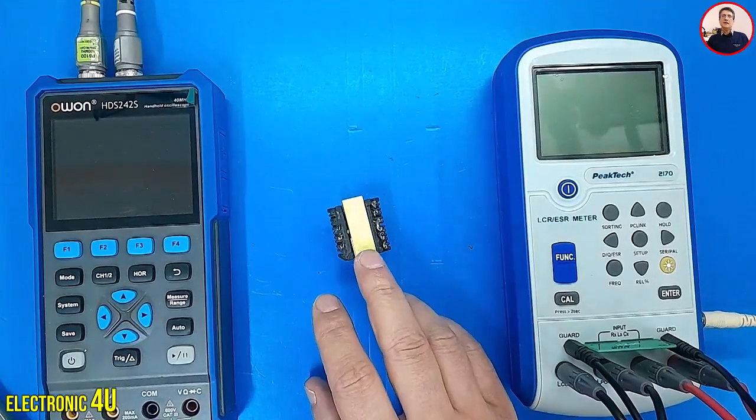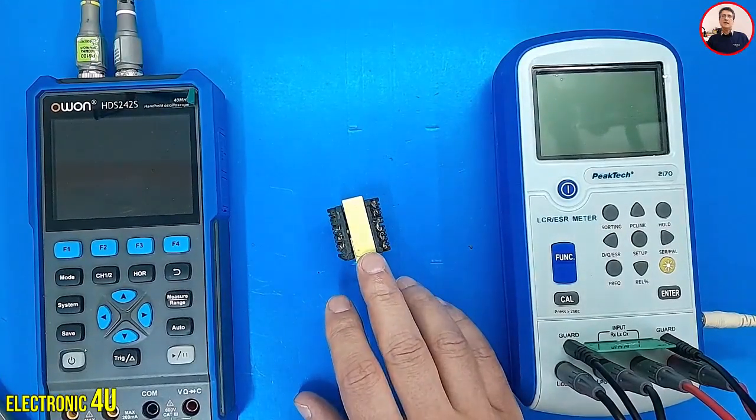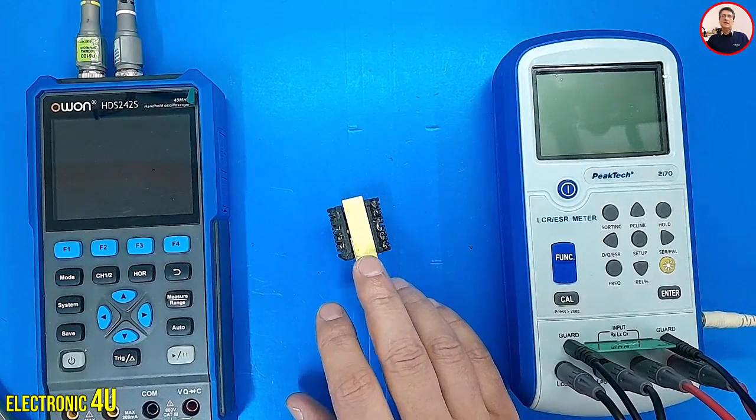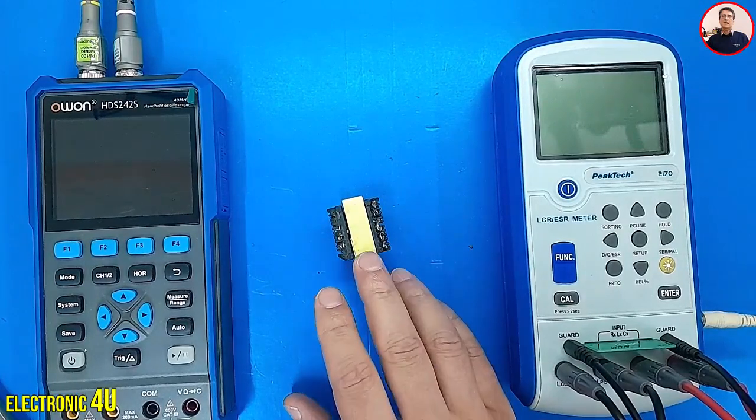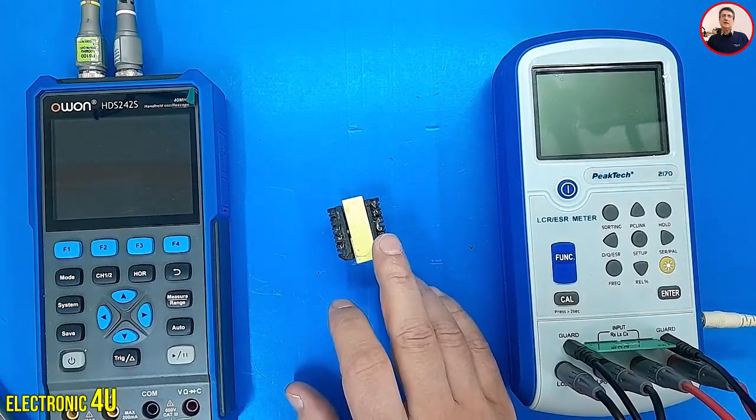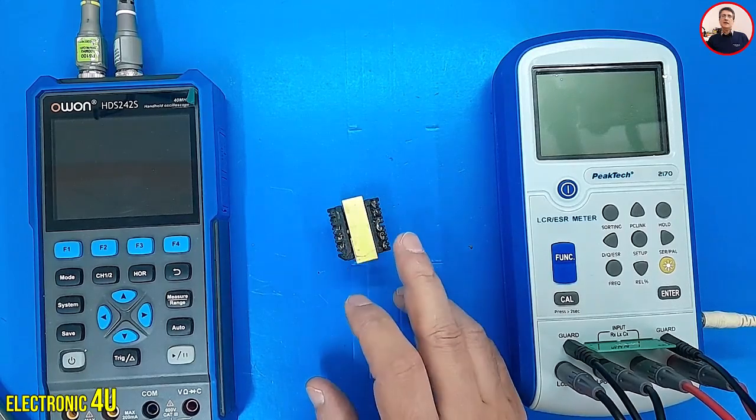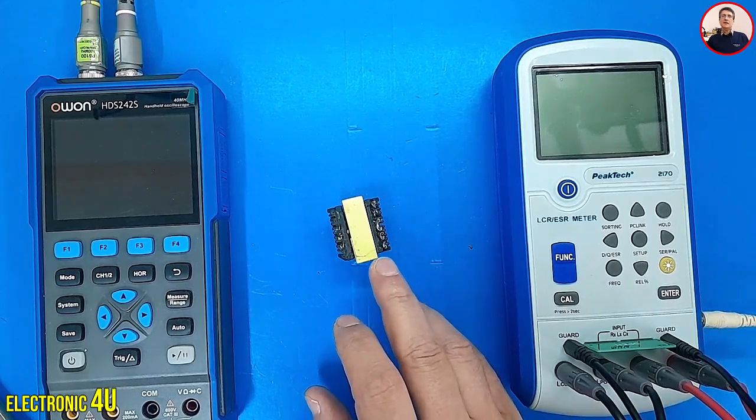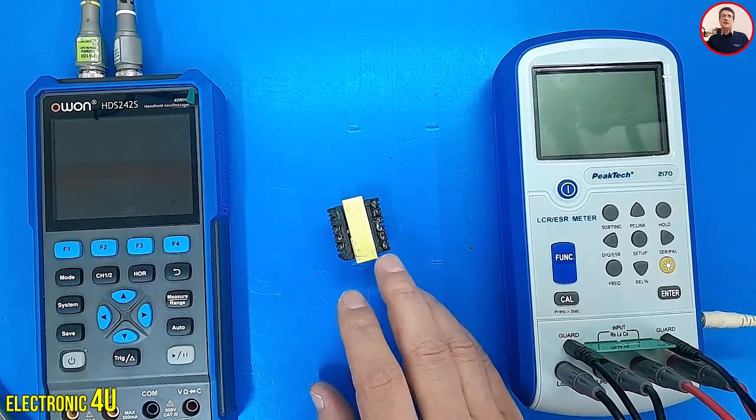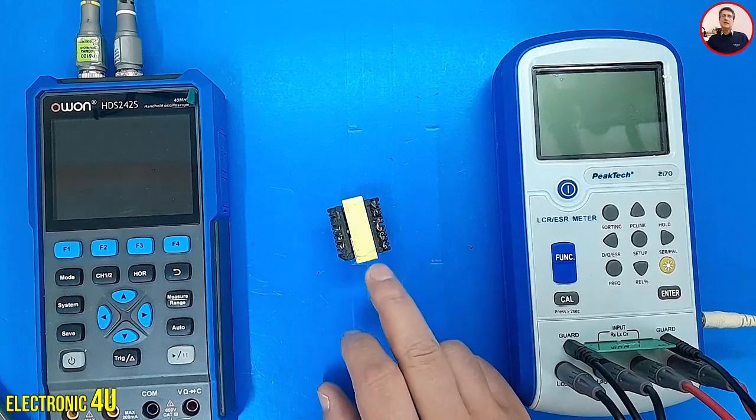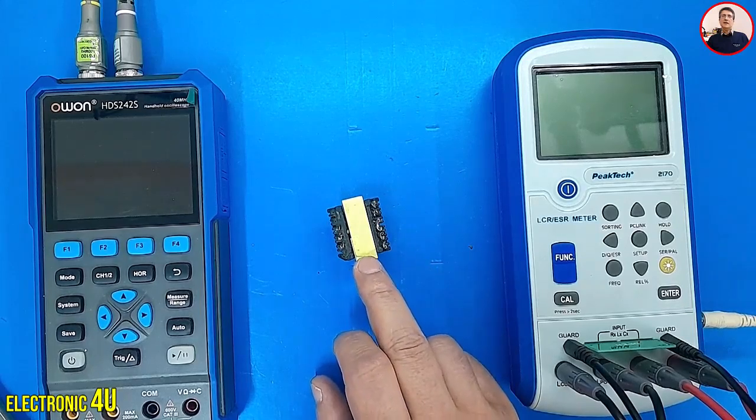This is a computer power supply transformer. To test this component, we can use a multimeter to measure the resistance of the primary and secondary windings. However, measuring the resistance alone doesn't tell us about the transformer's health. The windings might be fine, but the ferrite core could have lost its properties.